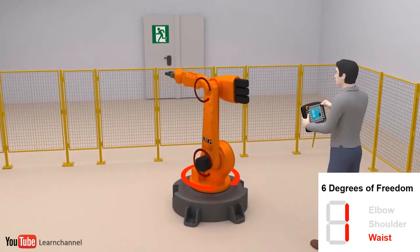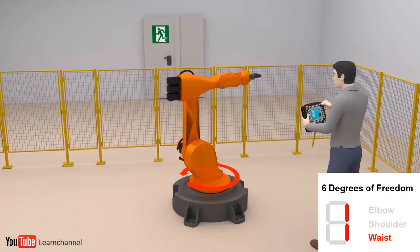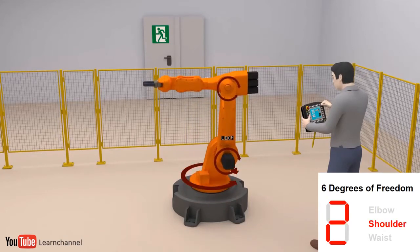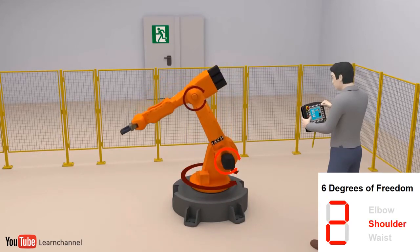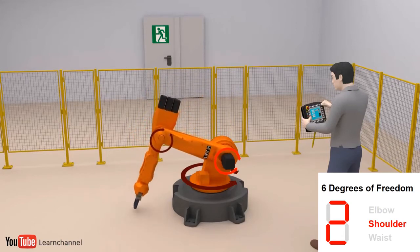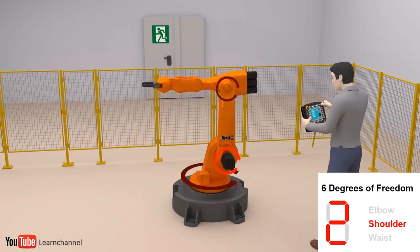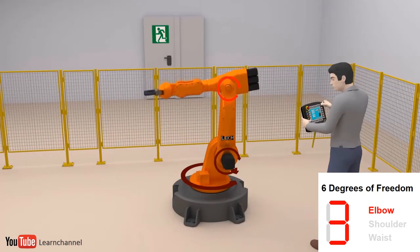A fellow will drive each axis with his teach panel so we get an impression of this robot. First axis drives the waist. The second axis moves the robot shoulder. The elbow of the robot is driven by the third axis.